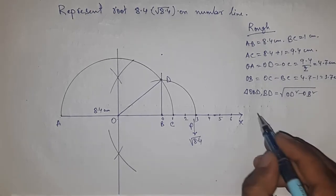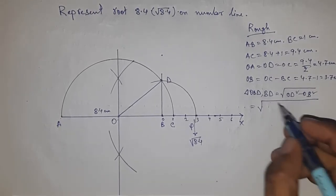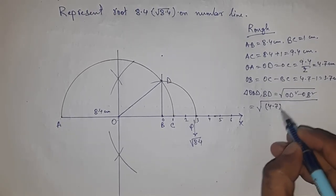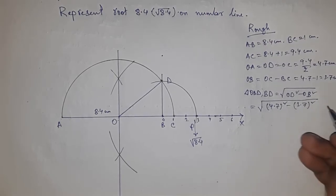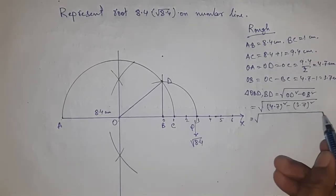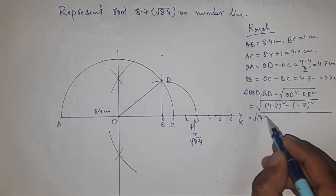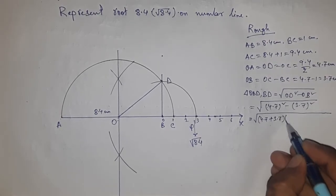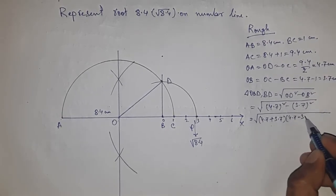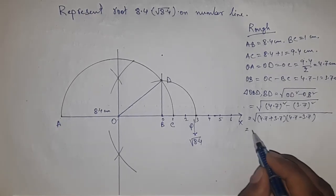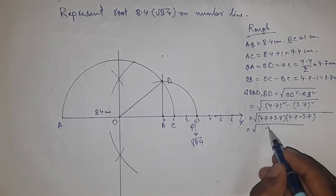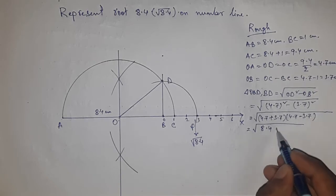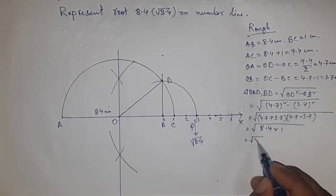I'm going to use the formula a squared minus b squared equals (a plus b)(a minus b). Applying the formula here: a plus b and a minus b, applying here. So from these, this is 8.4.